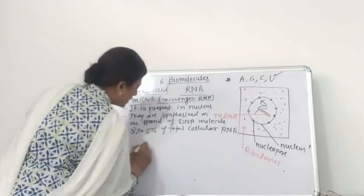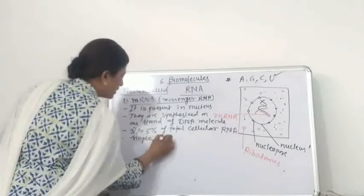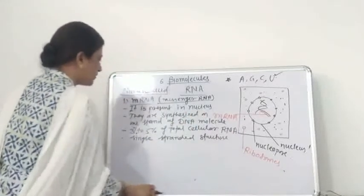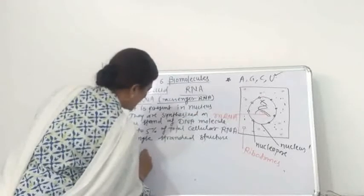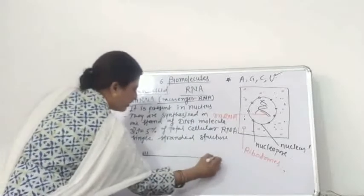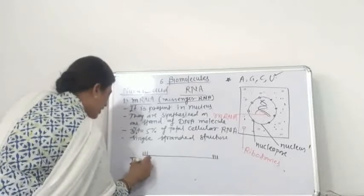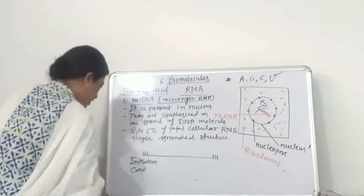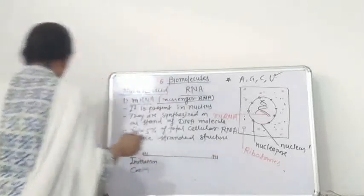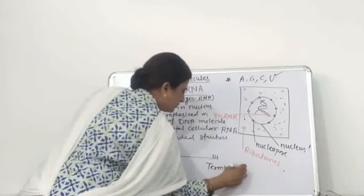The mRNA is a single-stranded structure. It consists of a single chain. On this single molecule of mRNA, the nitrogenous bases are present. The first three bases are called the initiation codon, and the last three are called the termination codon.